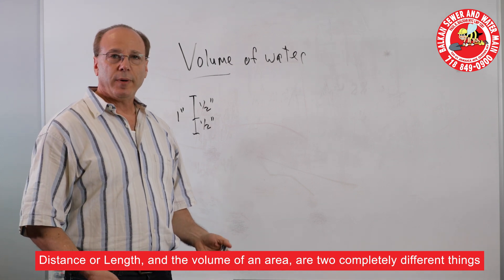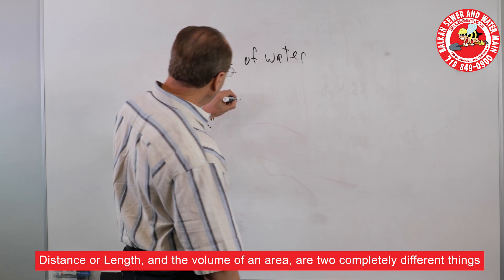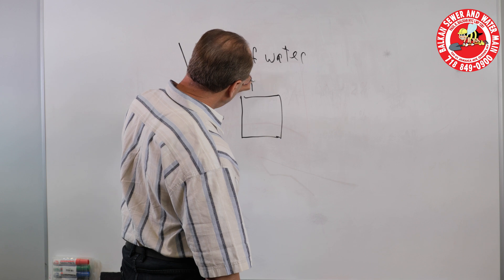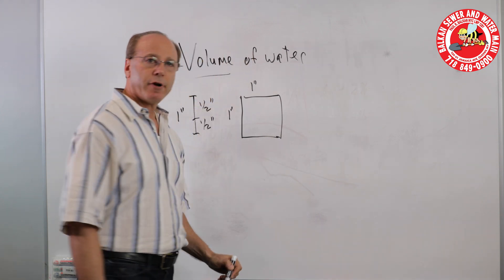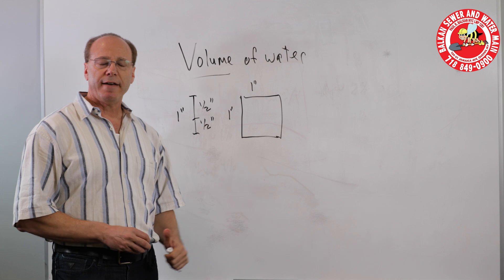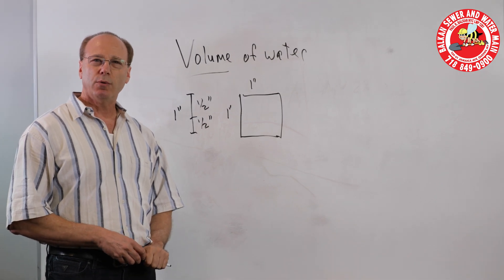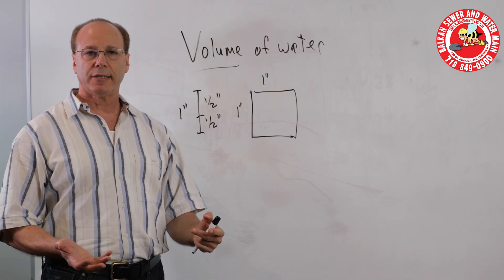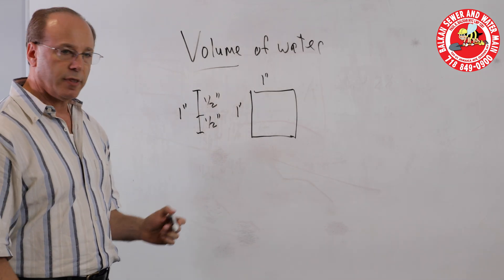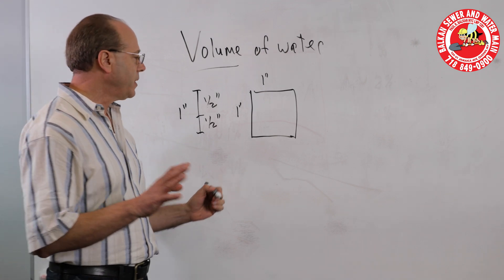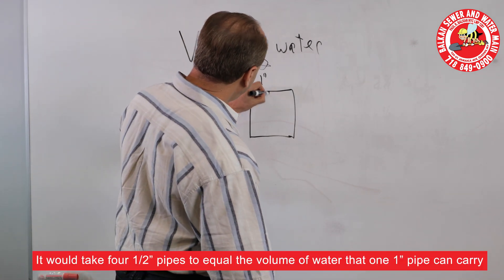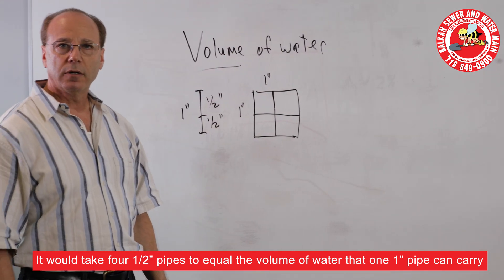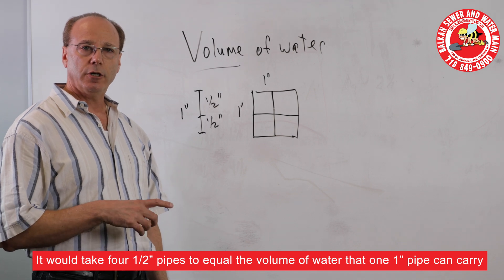However, if you ask folks the same question, if you had a one inch by one inch area, if you would consider that a pipe, how many half inch pipes would you need to equal one inch? Would it be two? Would it be four? Would it be six? The actual answer, and think of this in terms of your plumbing, when you're sizing your plumbing out, you would need four half inch pipes to give you the same amount of water that a one inch pipe would supply to you.